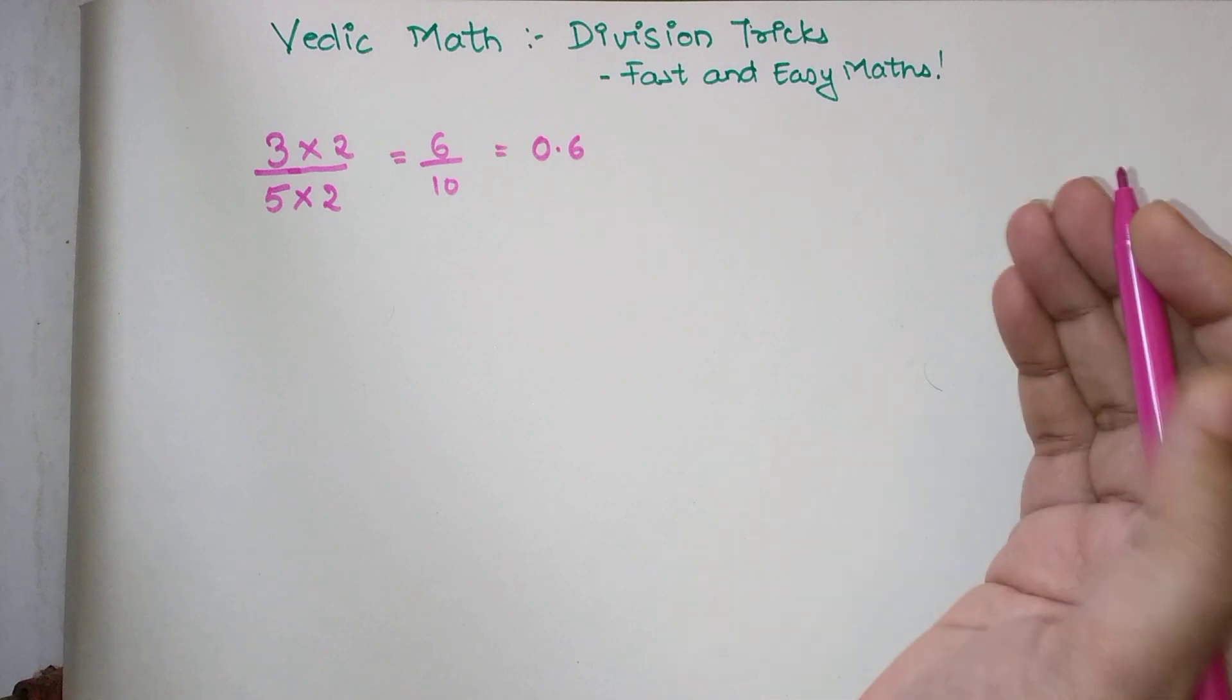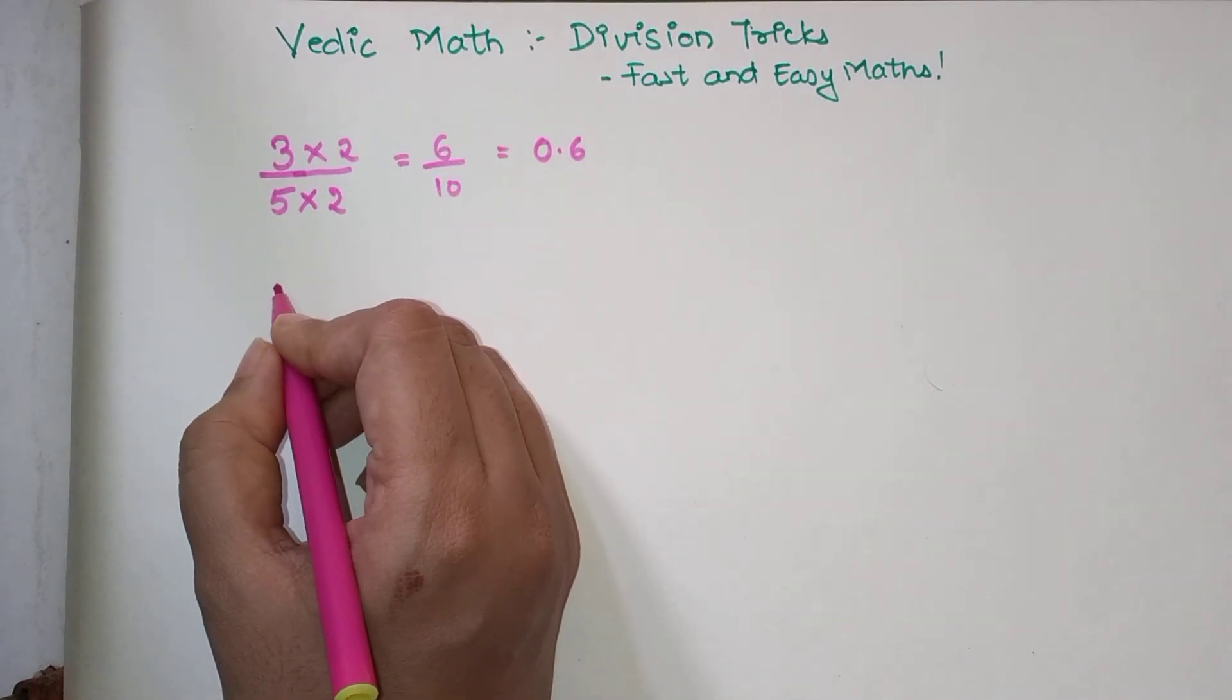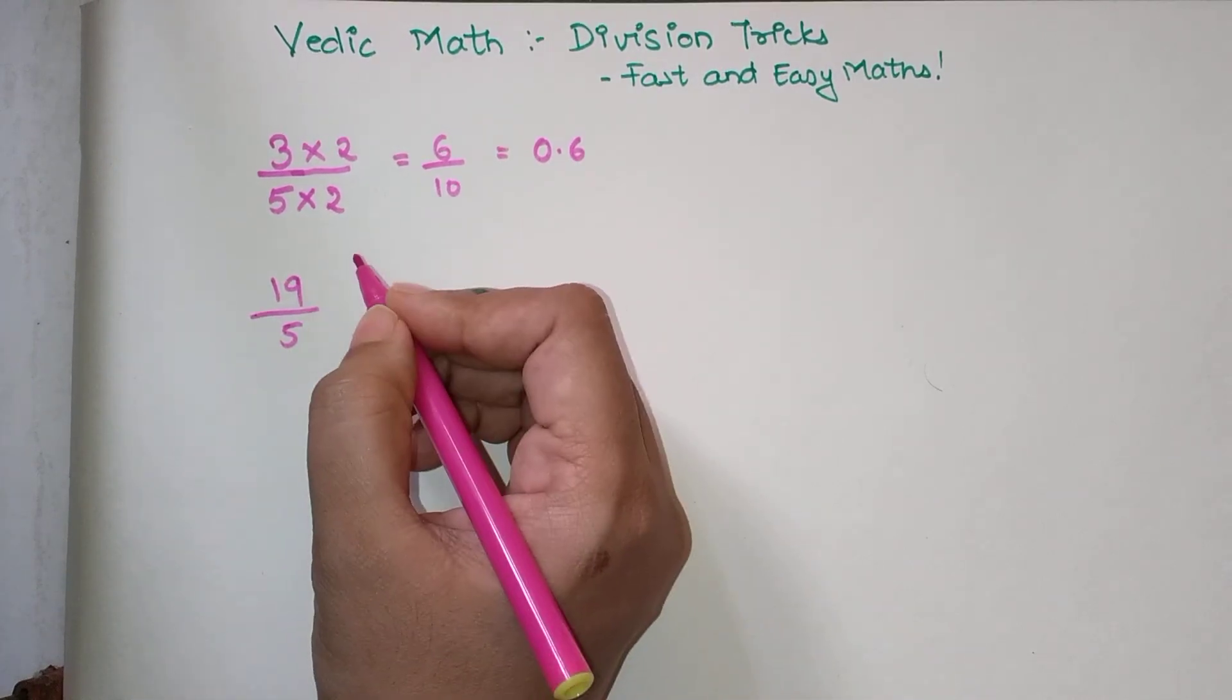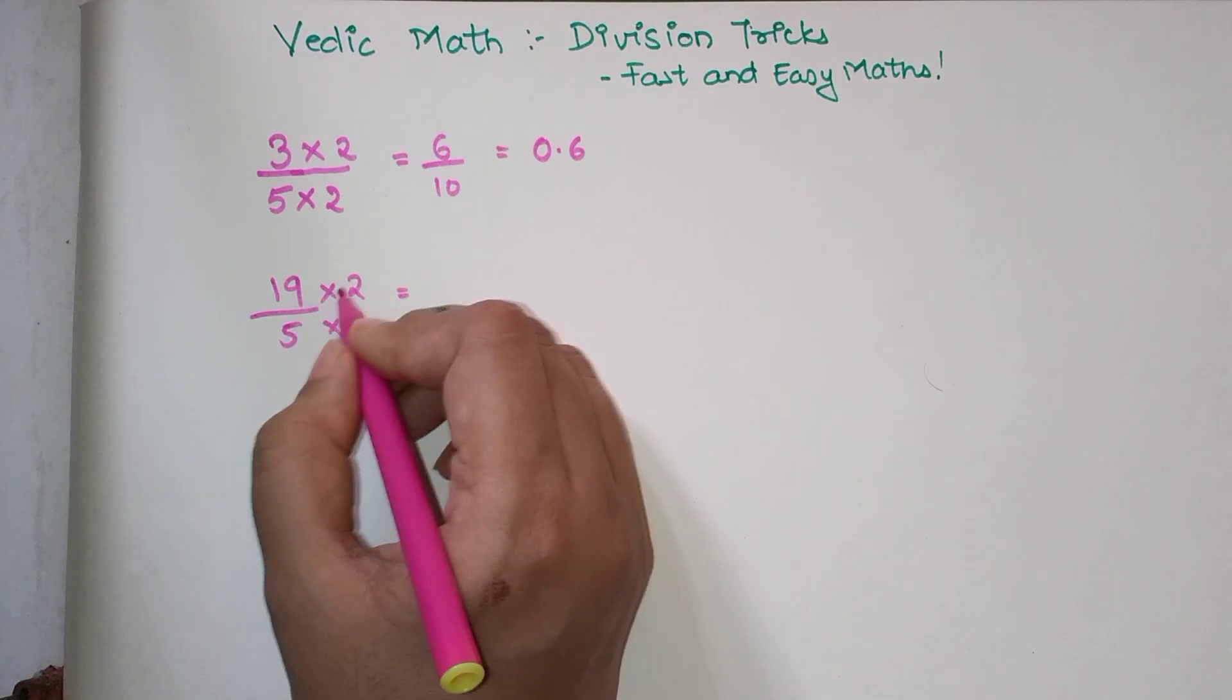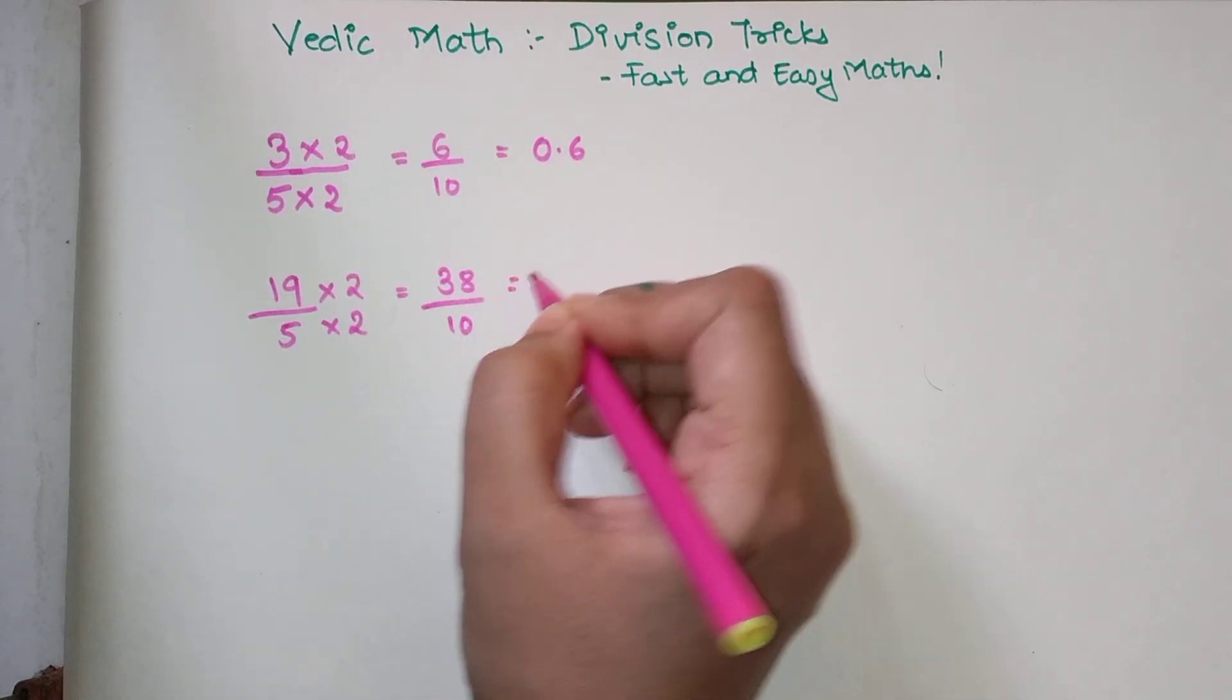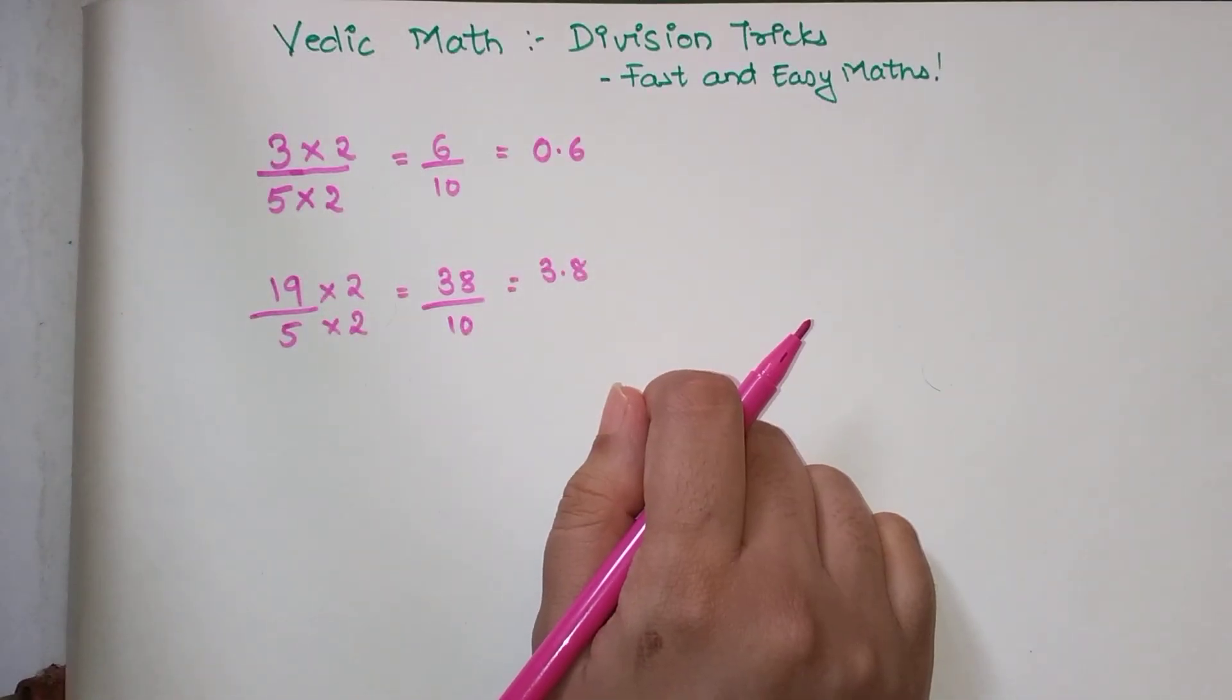Let's take another example: 19 by 5. We multiply the numerator and denominator by 2, so 19 into 2 is 38 upon 10. My answer is 3.8.